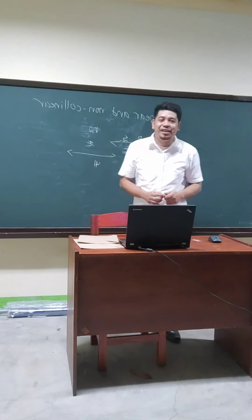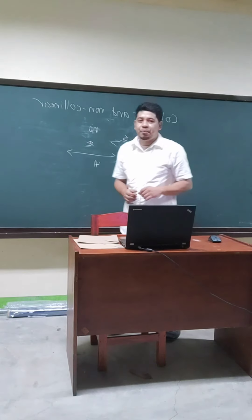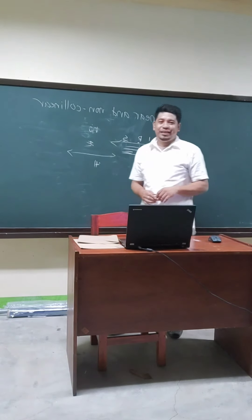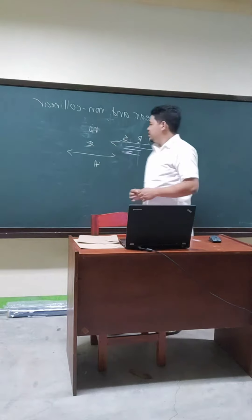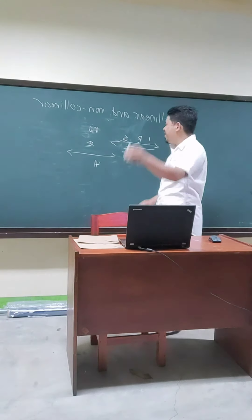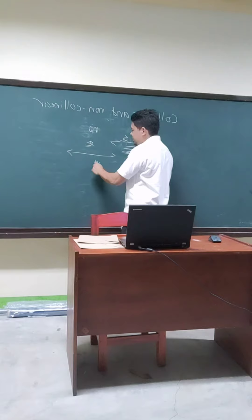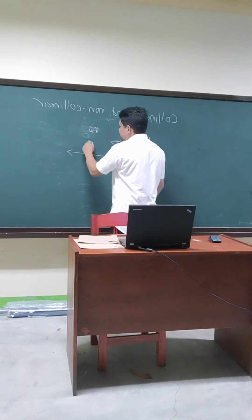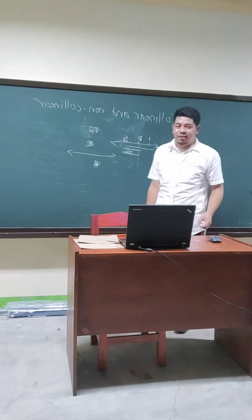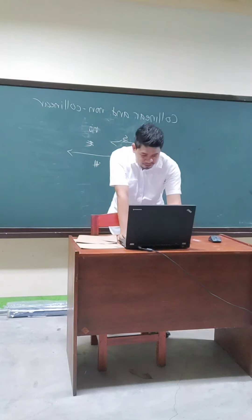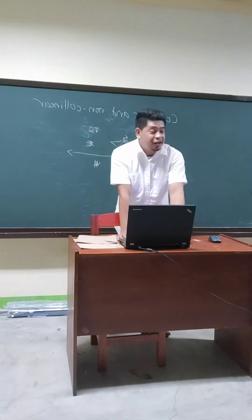Now let's proceed to non-collinear points. Non-collinear points are points that don't lie on the same line. For example, this is the line and this is point H and point E — this is what we call non-collinear. Do you have any questions?